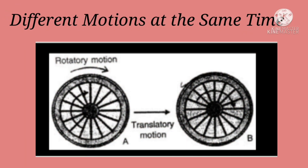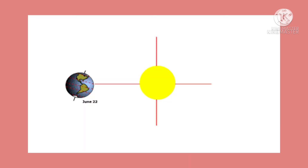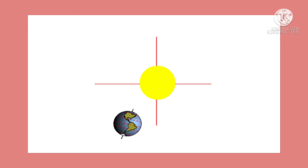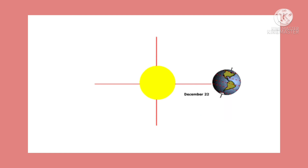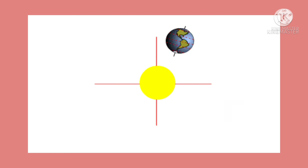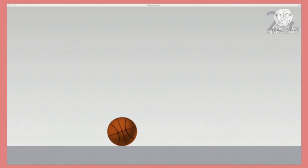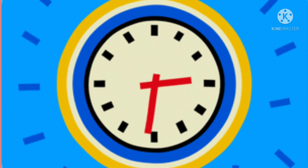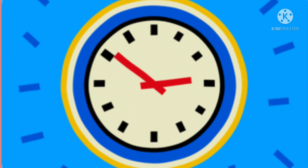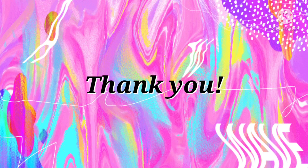Sometimes an object can show different kinds of motion at the same time. For example, the earth rotates about its axis while revolving around the sun. Thus, the motion of the earth is a combination of rotational, circular, and periodic motion. A ball rolling on the floor shows rotational motion as well as translatory motion. Motion of the hands of a clock or watch also shows periodic as well as circular motion.